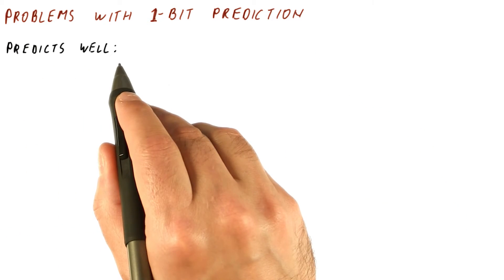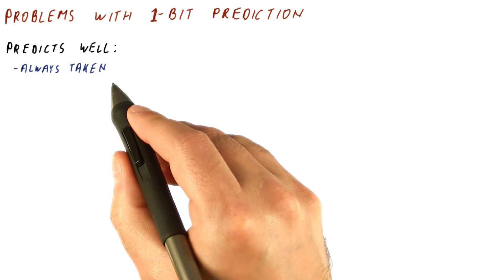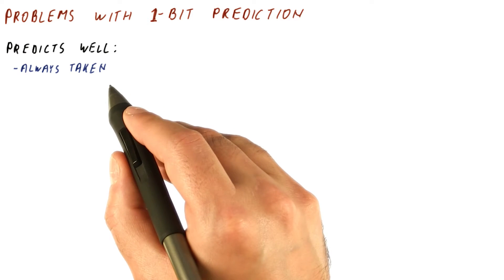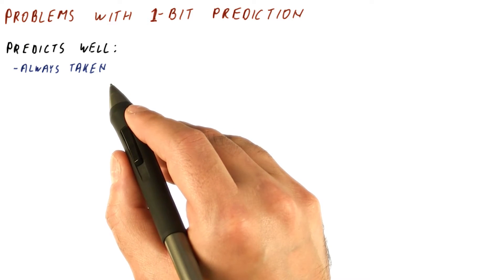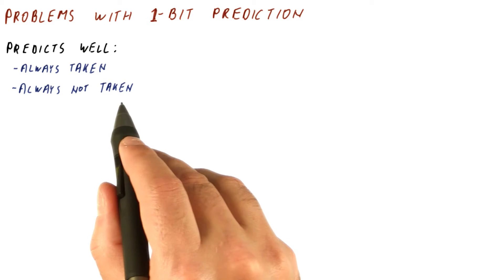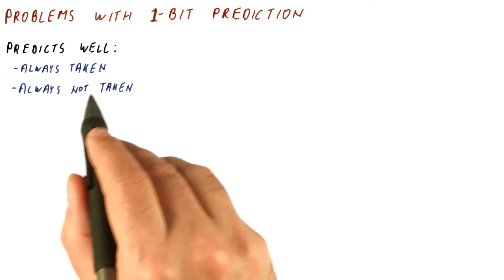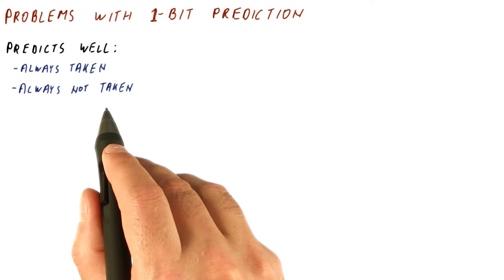The one-bit predictor predicts well branches that are always taken. It might make a mistake the first time it sees the branch, but after that it's going to start predicting taken, and because the branch is always taken, it always works well. Similarly, always not taken is predicted well because the very first time it might mispredict, but after that it learns the behavior and it stays the same.